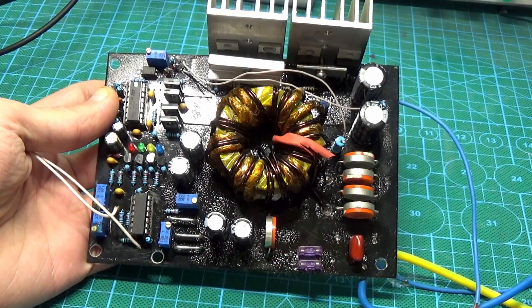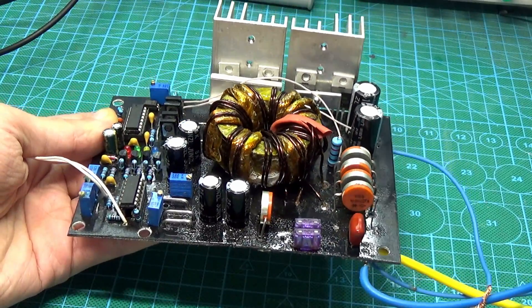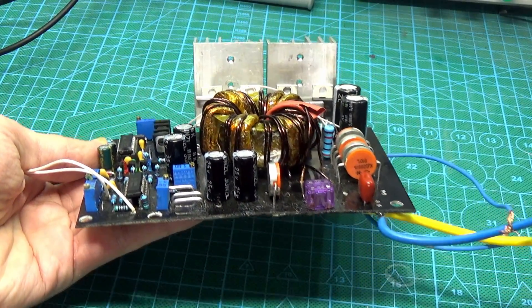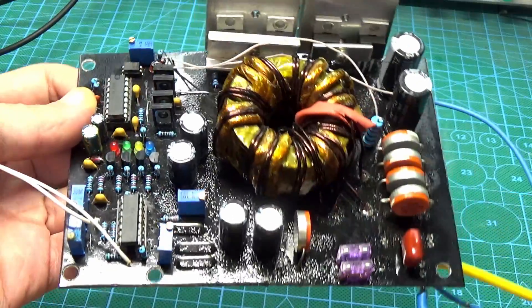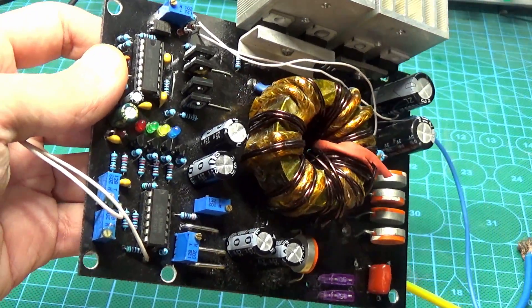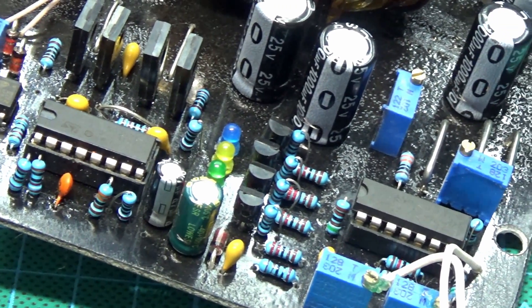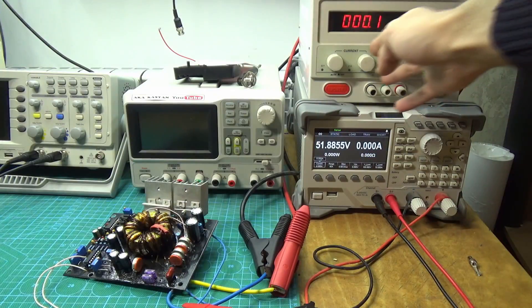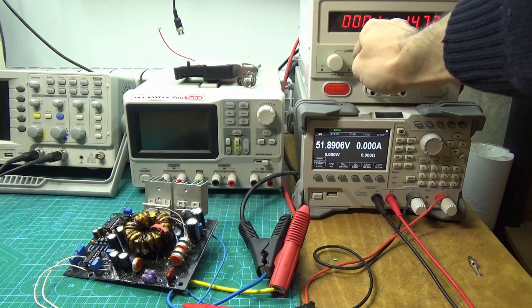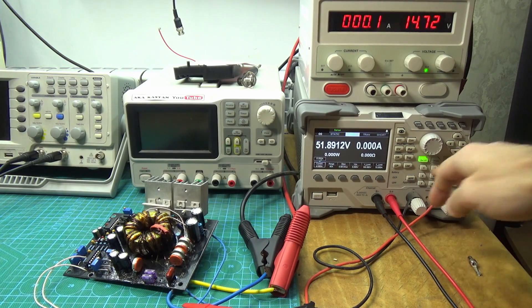There are many circuits of similar converters in the net. I want to introduce my own author's version, which I hope will like many, because it is relatively simple and full of all kinds of protections. There are protection against over and under voltage, against short circuits and overheating, a soft start function, and classic protection against reverse power polarity.